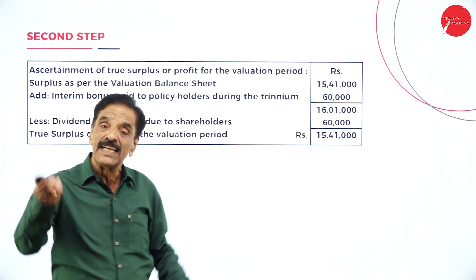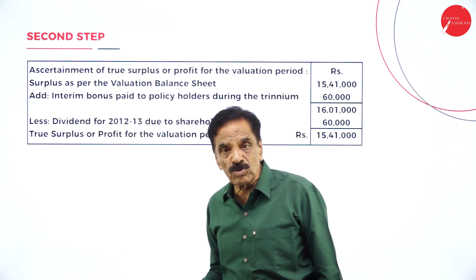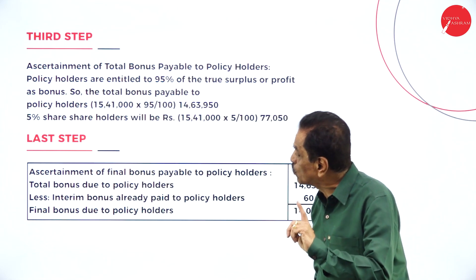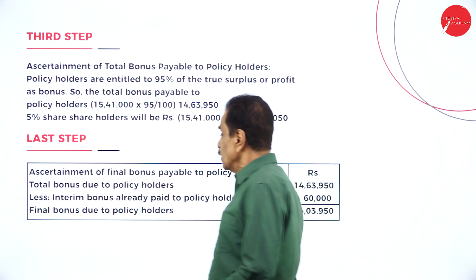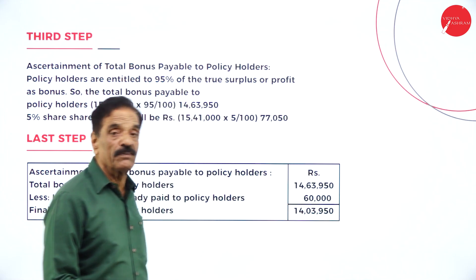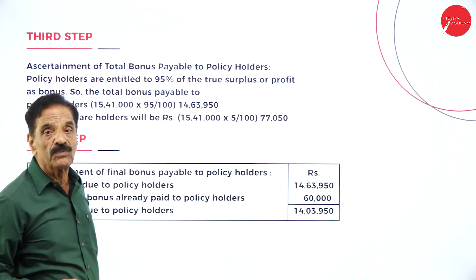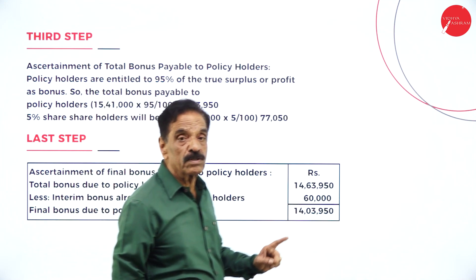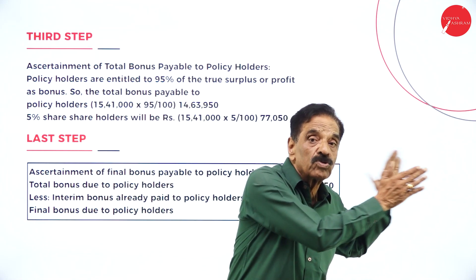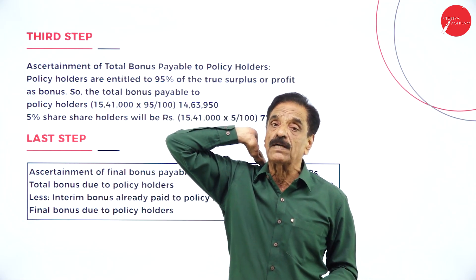Interim bonus should be added and dividend should be deducted. Next step: 95% goes to policyholder and 5% goes to shareholder. 95% of Rs. 15,41,000 is Rs. 14,63,950, which goes to the policyholder. 5% goes to the shareholder. Final bonus payable to policyholder: 95% is Rs. 14,63,950; less interim bonus already paid of Rs. 60,000; the balance is Rs. 14,03,950, which is the final bonus payable to the policyholder. So 95% goes to the policyholder and out of that, they already enjoyed the interim bonus which should be deducted — that is the final bonus payable.